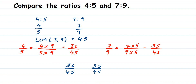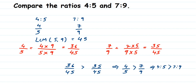Since 36 is greater than 35, we have 36 by 45 is greater than 35 by 45. Since 36 by 45 is equivalent to 4 by 5, we get 4 by 5 is greater than 7 by 9. Converting back to ratios: 4 is to 5 is greater than 7 is to 9. This method works for comparing any ratios. I hope this is clear — if you have further questions, type them in the comments. Thank you for watching!